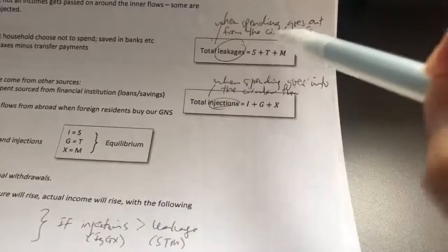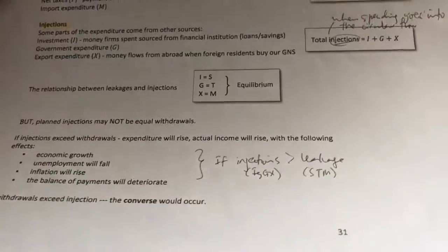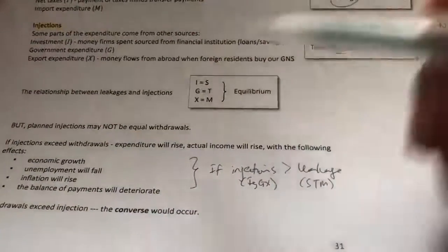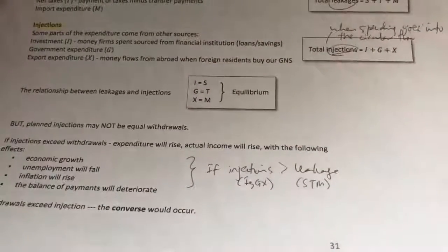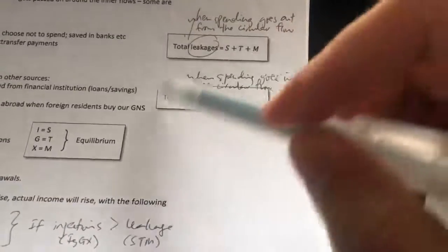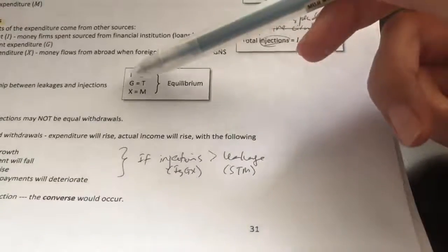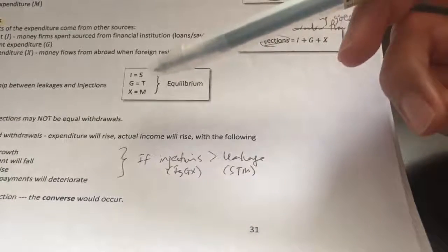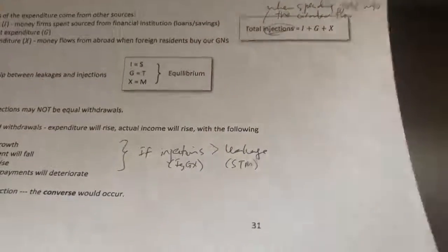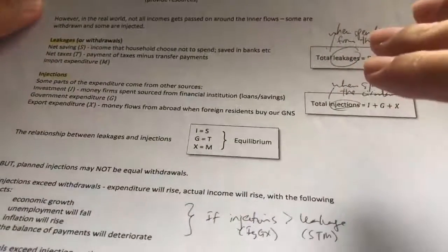Leakage is when spending goes out of the circular flow; injection is when spending goes into the circular flow. To achieve equilibrium, total leakages must be exactly equal to total injections. Breaking it down: investment must equal savings; government spending must equal tax; exports must equal imports. This is basically the gist of the circular flow of income.